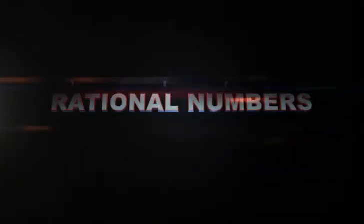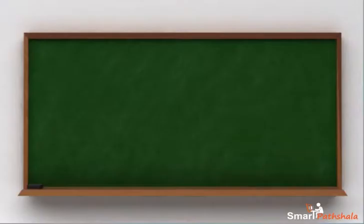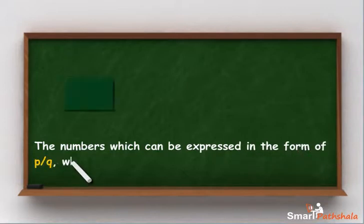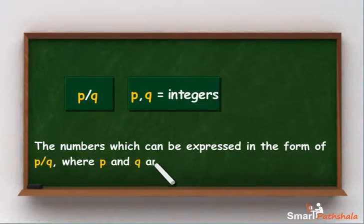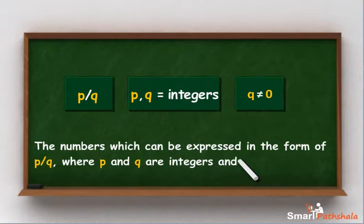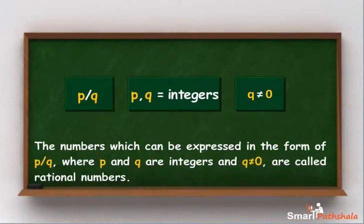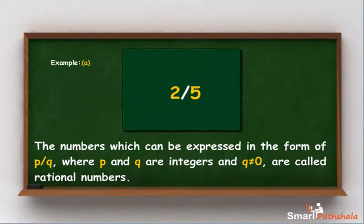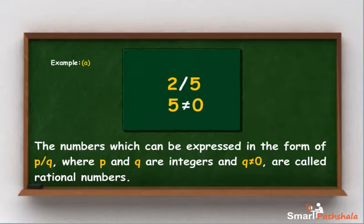Writing rational numbers between two given numbers. The numbers which can be expressed in the form of p upon q, where p and q are integers and q is not equal to zero, are called rational numbers. Example: 2 upon 5 is a rational number, as 2 and 5 are integers and 5 is not equal to 0.